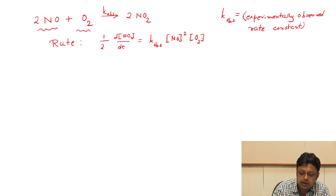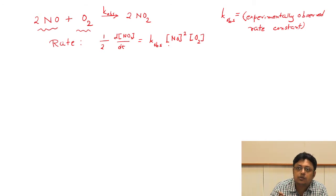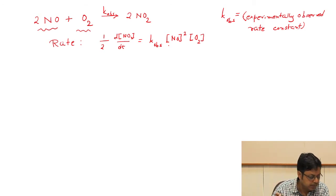We found that the reaction follows a rate law where the rate depends on [NO]² [O₂]. Since three-body collisions are rare, this is not an elementary reaction where two nitric oxide molecules and one oxygen molecule collide simultaneously to produce nitrogen dioxide. It must be broken into smaller elementary steps, which we are now going to discuss.